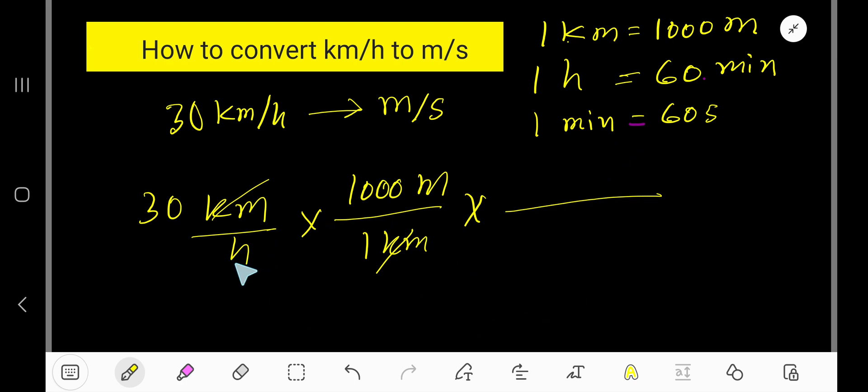To cancel hour, we'll write hour at the top over 60 minutes. And to cancel minute, we'll write minute at the top of 60 seconds.